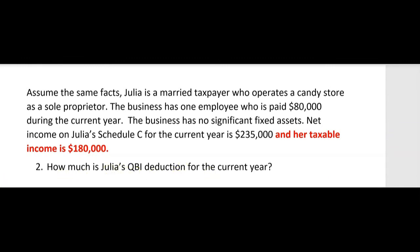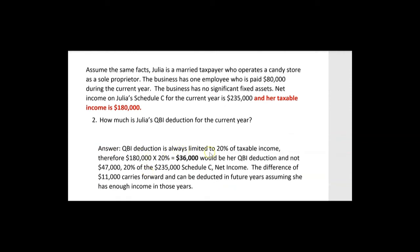How much is Julia's QBI deduction? The QBI deduction is always limited to 20% of taxable income. Therefore, her taxable income of $180,000 times 20% is $36,000 — that's her QBI deduction this time, not $47,000. Why not? Last time taxable income was higher than the Schedule C net profit of $235,000 — it was $278,000. This time it's only $180,000, so the QBI deduction is limited to 20% of taxable income, giving us $36,000.